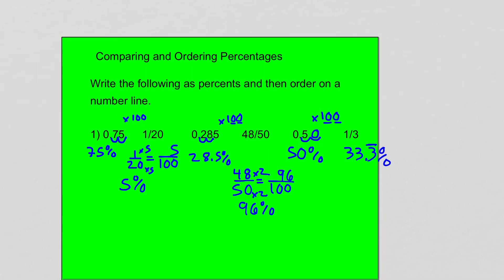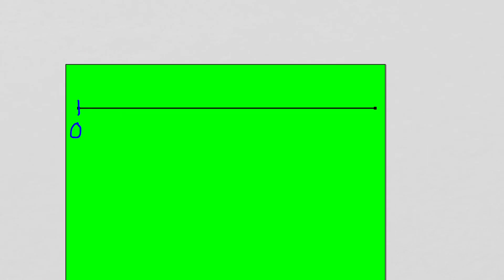Once you have all these fractions and decimals written as percents, it's really easy to compare them. We know now that 48 out of 50, because it's 96 percent, is larger than 0.5, which is 50 percent. And 0.5 is larger than one-third, which is 33.3 repeating percent. The next thing is to write these numbers on a number line. These are all numbers between 0 and one whole. On our number line, we'll start at 0, end at one whole, and we can think of the one whole as 100 percent.